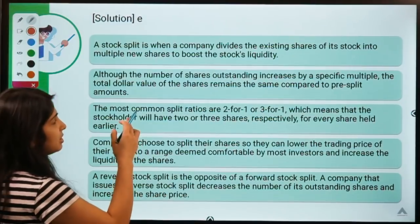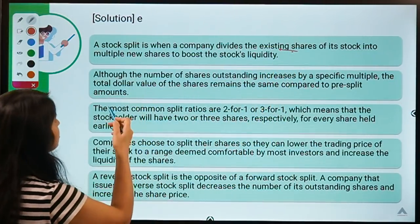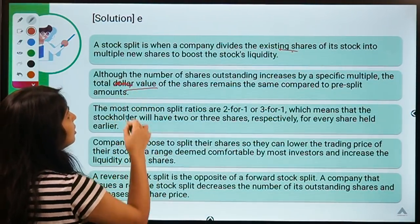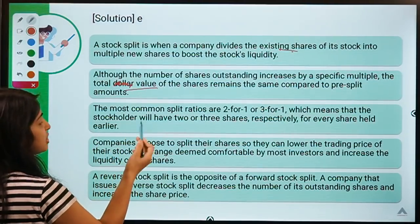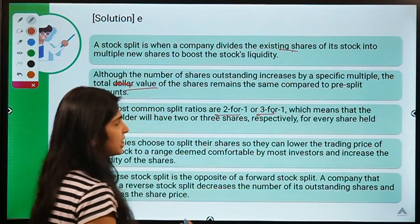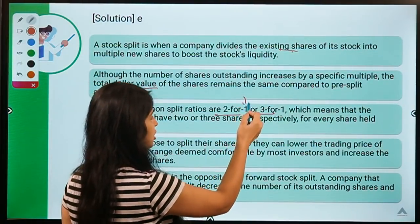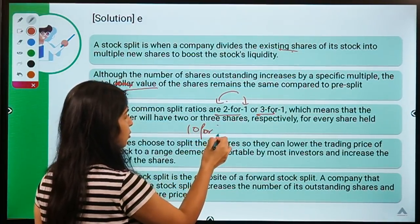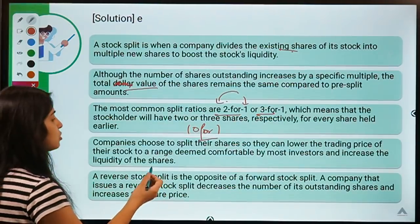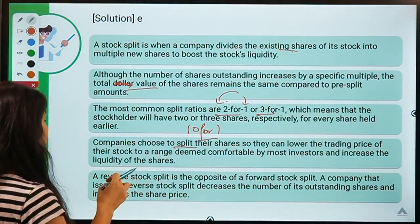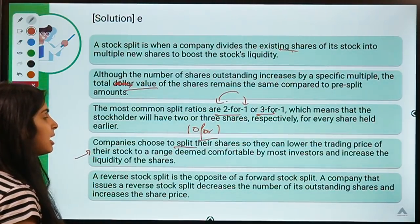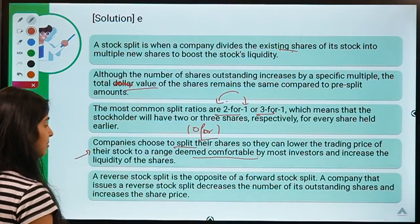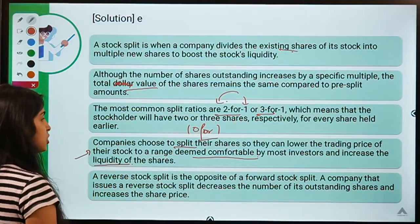A holder of 100 shares at ₹100 (worth ₹10,000) now holds 1,000 shares at ₹10 — still worth ₹10,000. Pre-split and post-split valuations are the same. When a company divides its existing shares, the number of shares outstanding increases but the total value remains the same. Most common split ratios are 2-for-1 or 3-for-1, though it can be anything. Companies split shares to lower the trading price to a range more comfortable for investors and to increase liquidity.